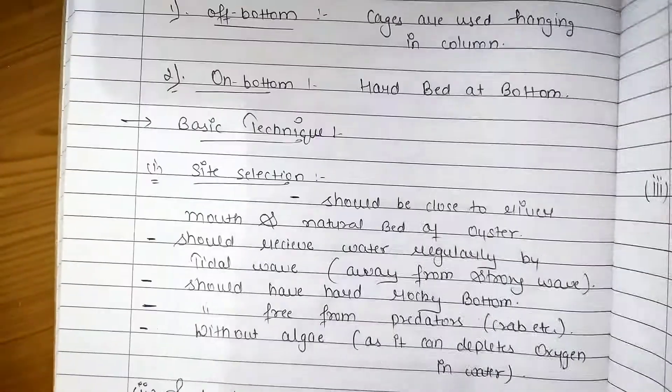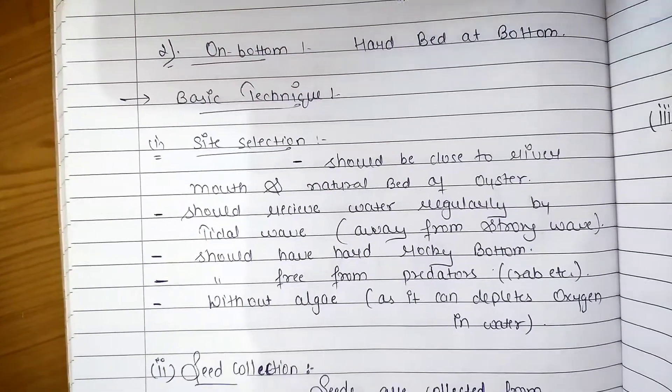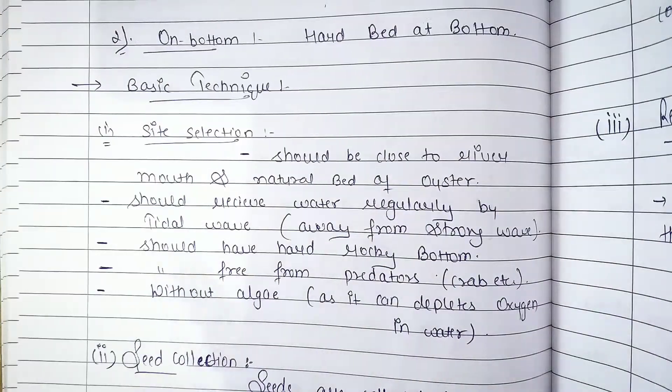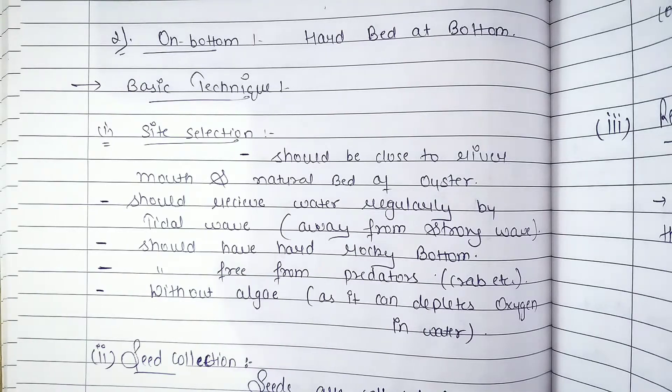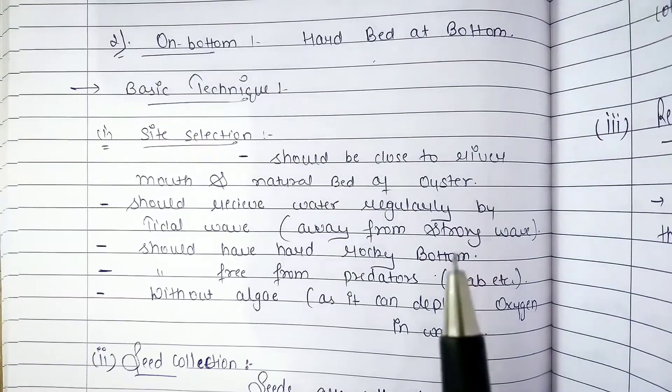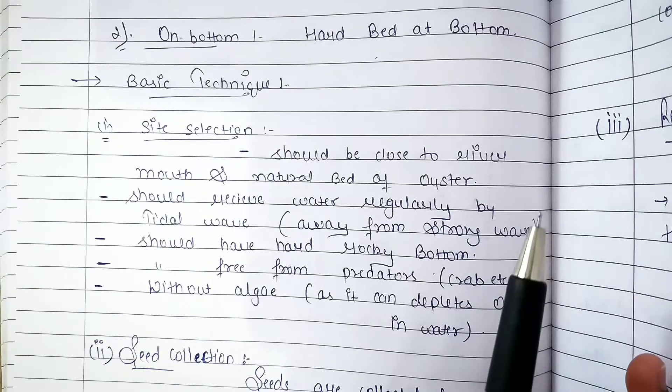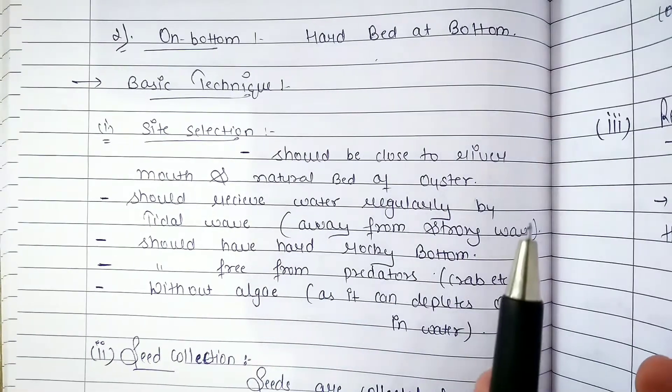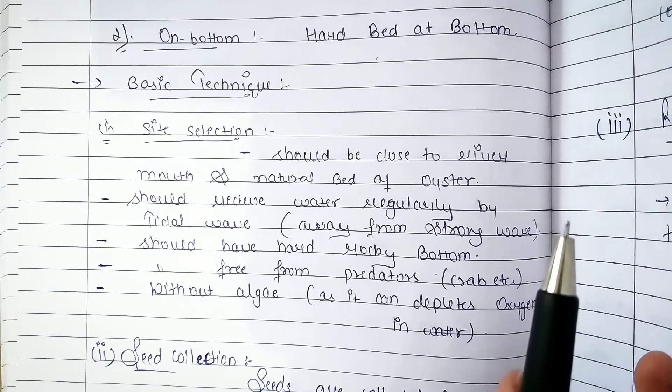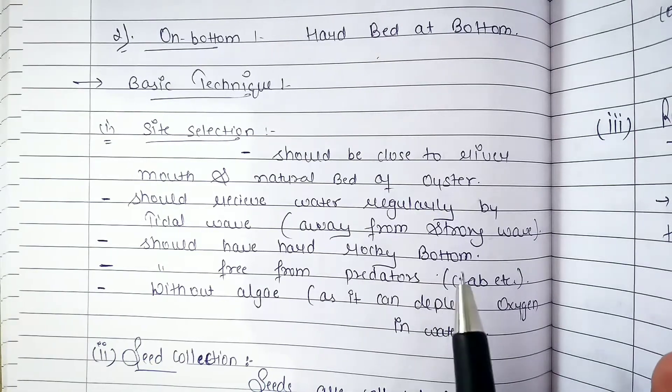The first technique is site selection. If you have culture in the area, you can select the site from the natural area. The site should be selected where there are tidal waves, water is used regularly, the surface is hard and predator free.